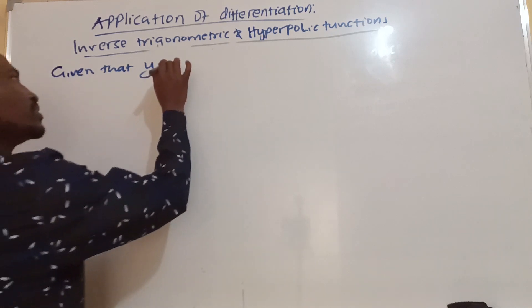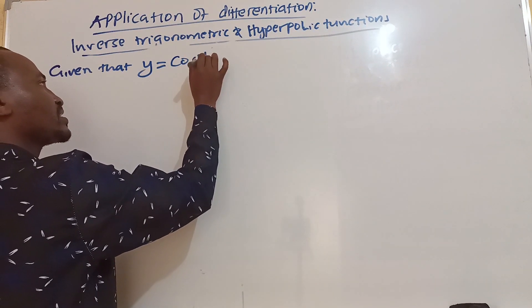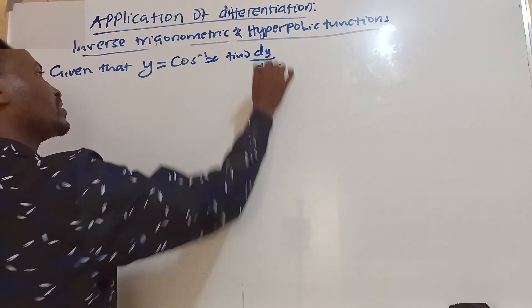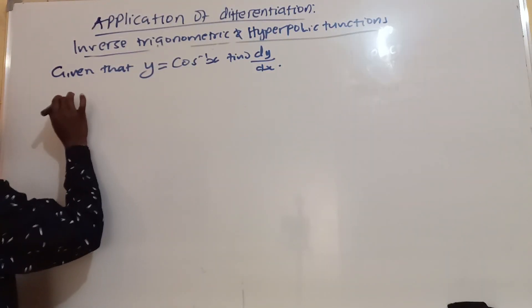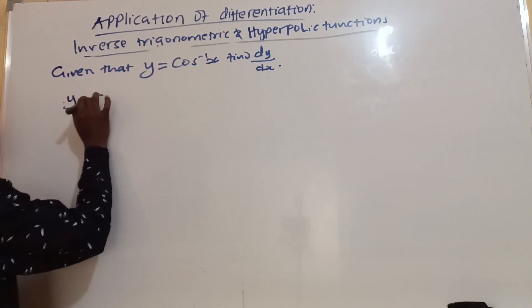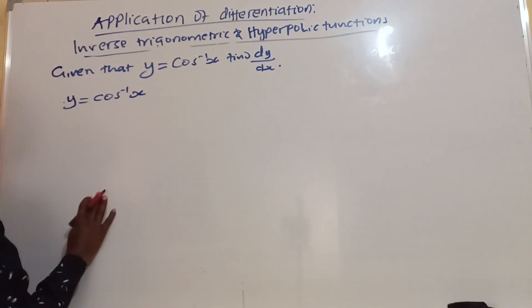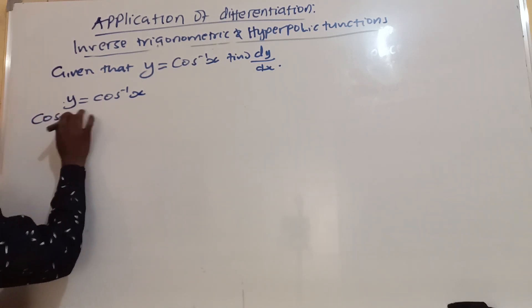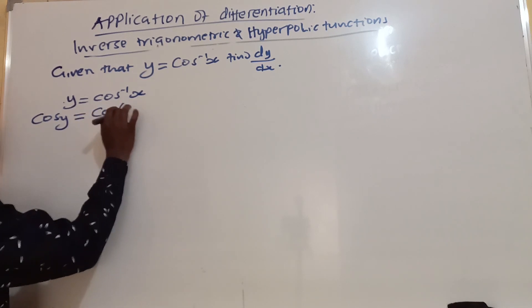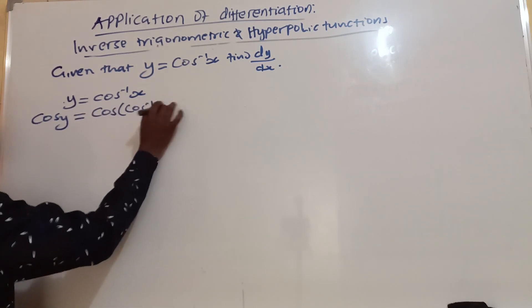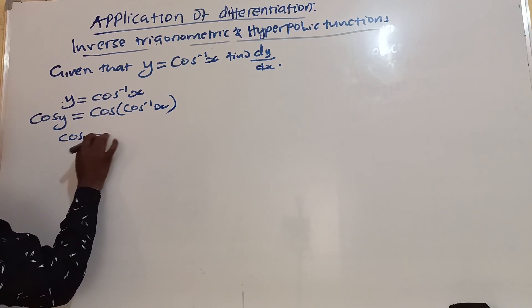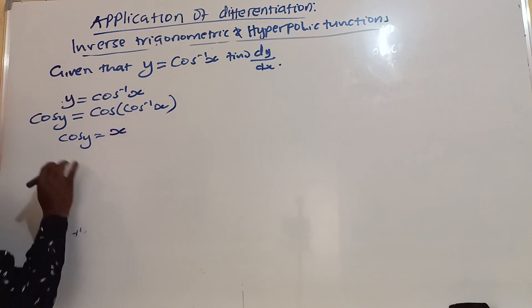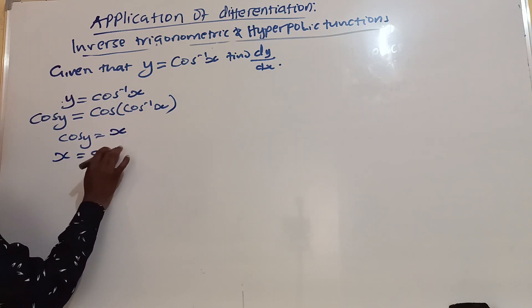Let y = cos inverse x. We apply the cancellation equation for cosine: applying cosine on both sides, the cosine function cancels out the cosine inverse function, giving us simply x. So x is equal to cosine y.